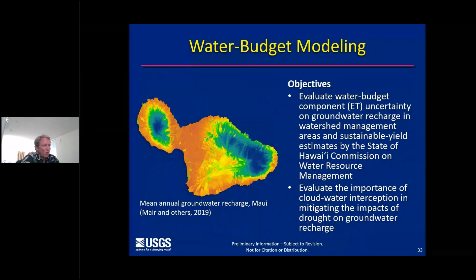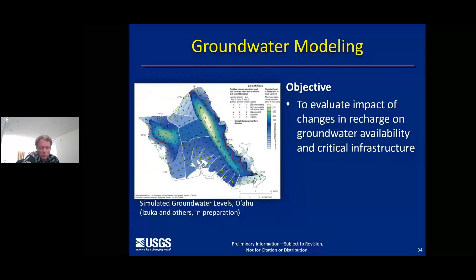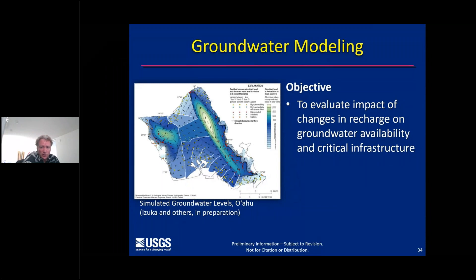The water budget modeling component's objectives include evaluating water budget component or ET uncertainty on groundwater recharge in watershed management areas and sustainable yield estimates by the State of Hawaii Commission on Water Resource Management. We'd also like to evaluate the importance of cloud water interception in mitigating the impacts of drought on groundwater recharge. Finally, a groundwater modeling step would evaluate the impact of changes in recharge identified through our water budget modeling effort on groundwater availability and critical infrastructure.